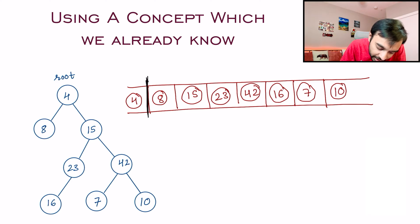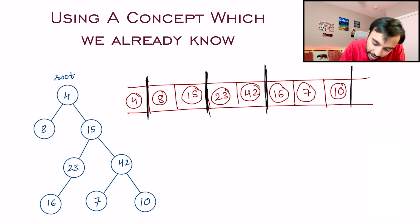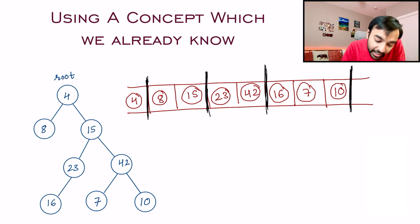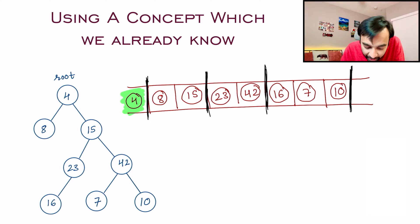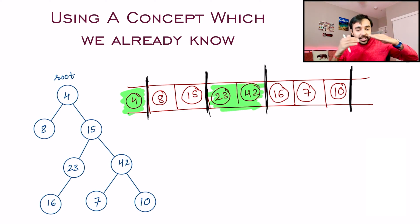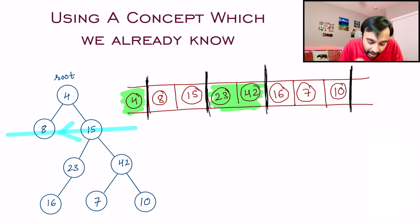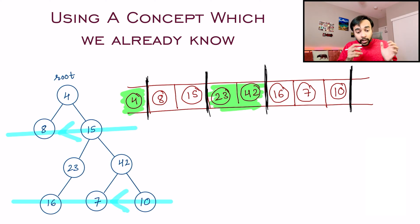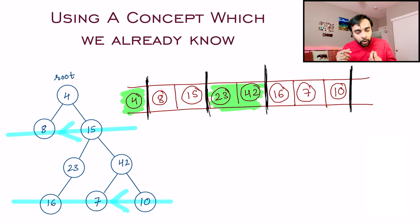If you mark all the levels: this is your first level, second level, third level, and fourth level. In this traversal you can see that two of the levels are already traversed in the correct way — 4 is correct and 23 and 42 are correct. You only need to do a reverse traversal of the alternate levels, because you have to traverse the second and last levels in a right-to-left fashion.